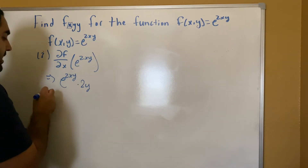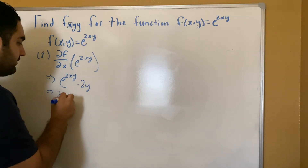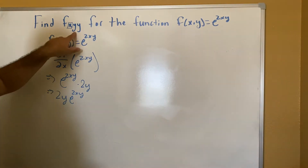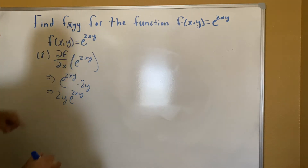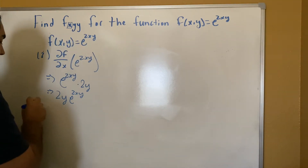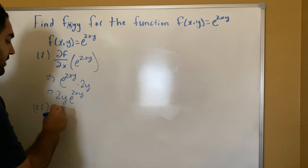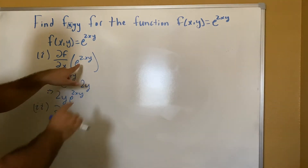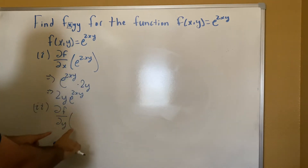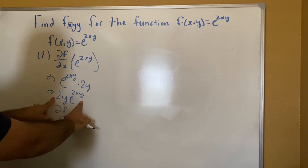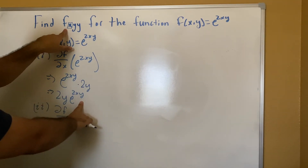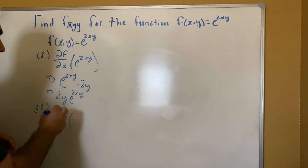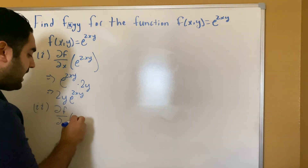Now we're going to go ahead and take the partial, but now it's going to be in terms of y. So our second part is the partial of the function in terms of y. But in this case, we're not going to do it against the original function — now we're going to do it against this function here, because we already did it in terms of x. Now we're going to go ahead and do it in terms of y.